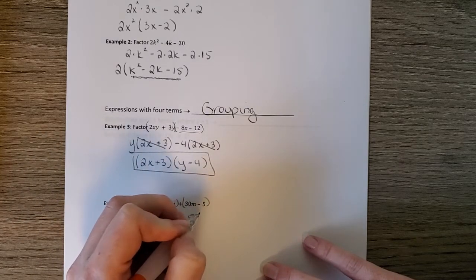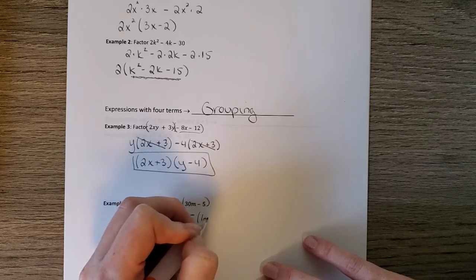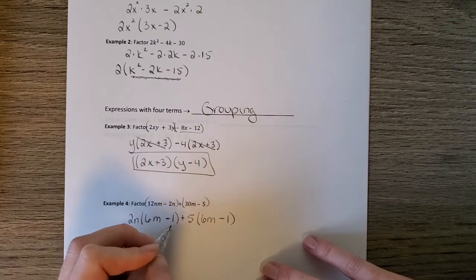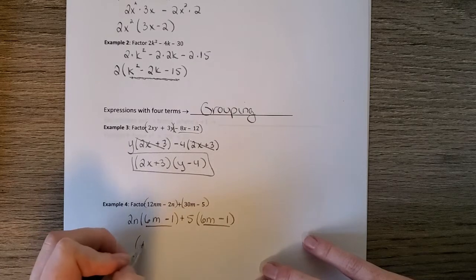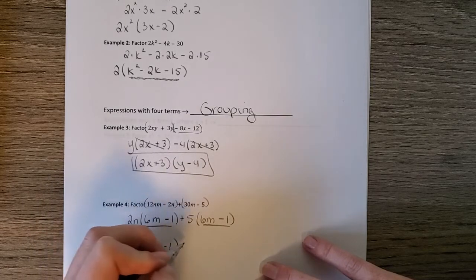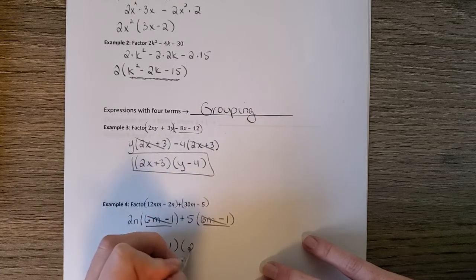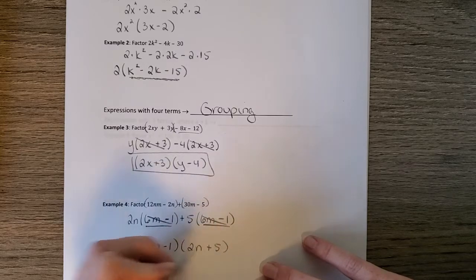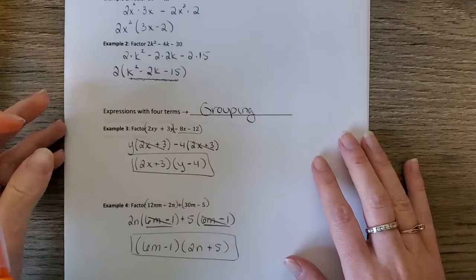And then over here, the GCF would be 5. 5 times 6 is 30. 5 times 1 is 5. We see that common term, 6m minus 1. And if we cancel those away, we have 2n plus 5. Okay, so that's grouping.